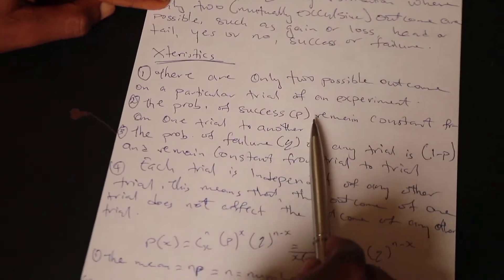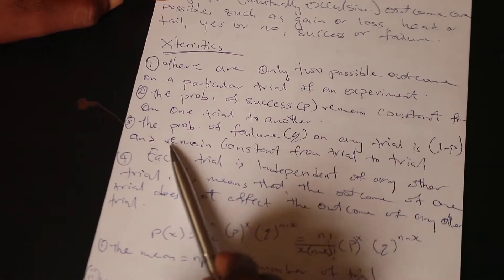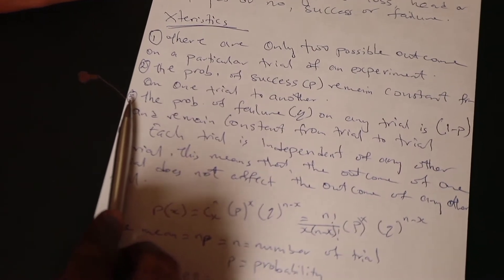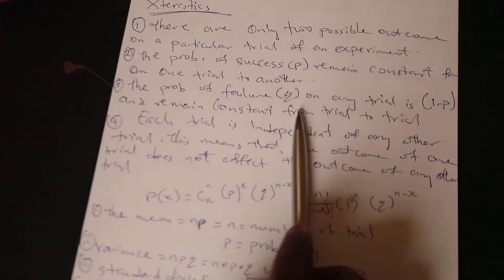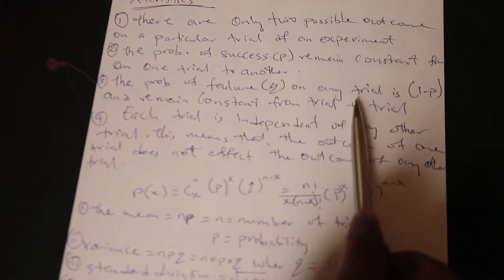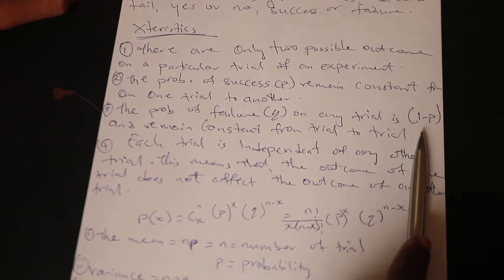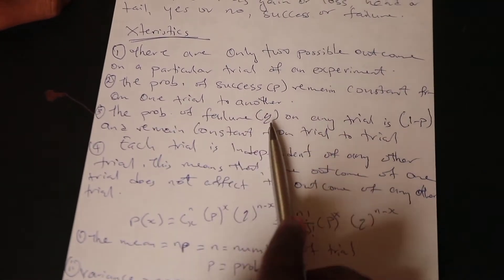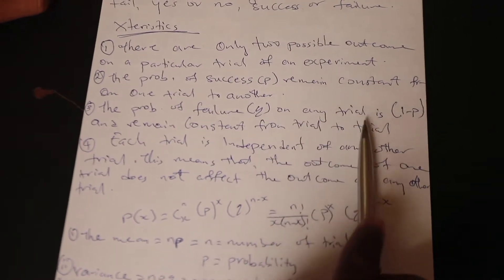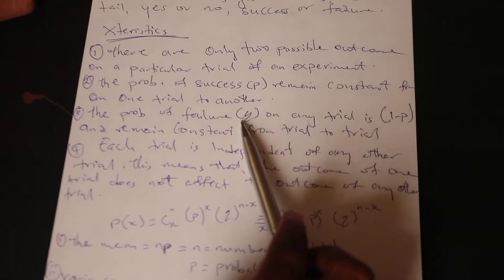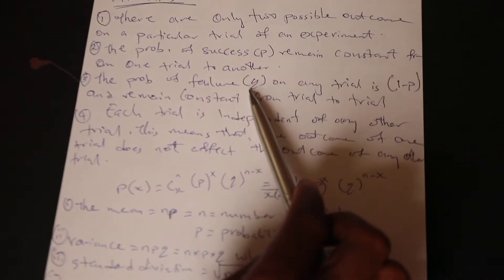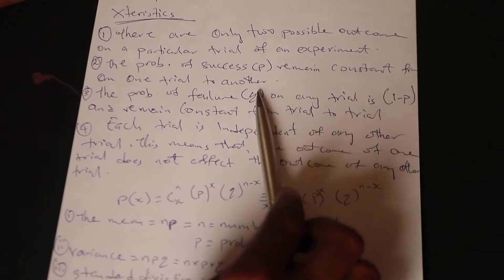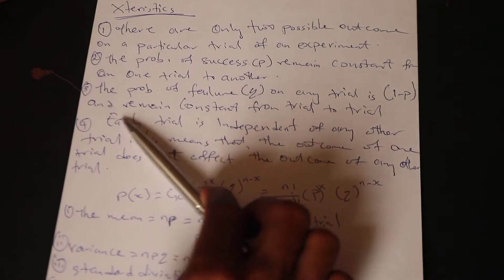The probability of success P remains constant from one trial to another. The third characteristic says the probability of failure Q on any trial is 1 minus P. If you are to look for Q, it is Q equals 1 minus P. 1 minus P will give you the answer of Q.